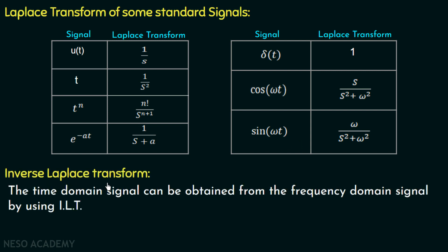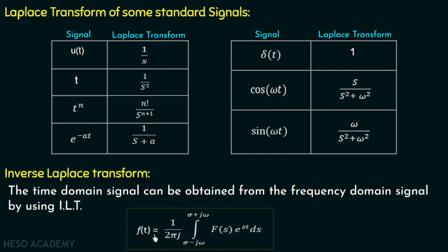Now we will move on to the inverse Laplace transform. As the name suggests, it is the inverse of the Laplace transform — just as Laplace transform gives the frequency description of a time domain function, the inverse Laplace transform recovers the time domain signal from the frequency domain signal. The expression is f(t) equal to 1 over 2πj times the integral from σ minus jω to σ plus jω of F(s) multiplied by e to the power st ds. However, we will not use this complicated equation; instead, we will find the inverse Laplace transform using the method of partial fractions.